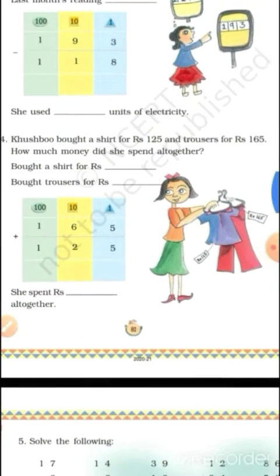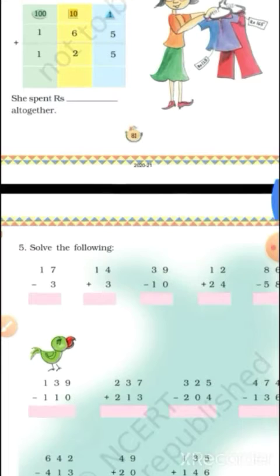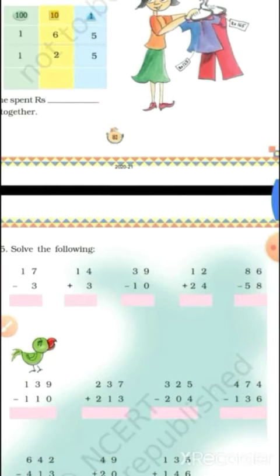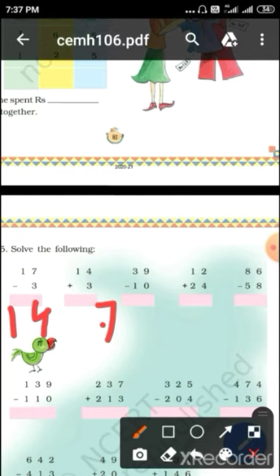Next is 'Solve the following.' First sum: 70 minus 3. 7 minus 3 is 4, and carry 1, so 1 plus 4 is... answer is 43. Next problem continues.